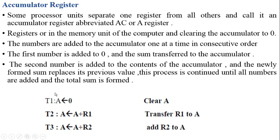Consider this example: initially at time instant t1, the accumulator register — abbreviated as A or AC, here used as A — is initialized with 0. At the next time instant t2, the content of A is 0.